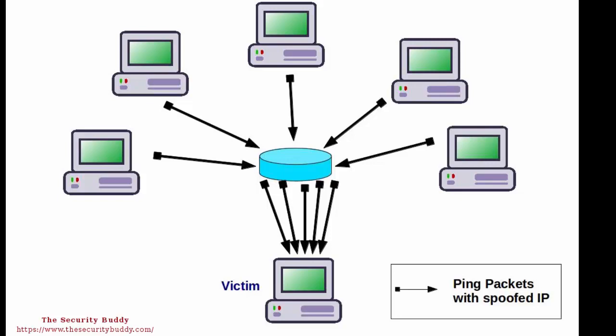When the victim machine will reassemble the IP fragments, it will end up with the IP packet larger than 65535 bytes. As a result, the victim computer cannot handle that properly and a buffer overflow will happen.